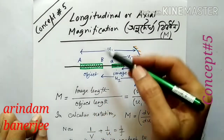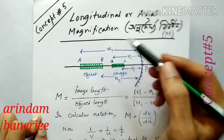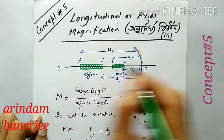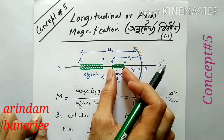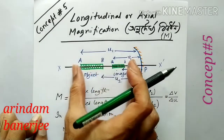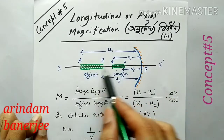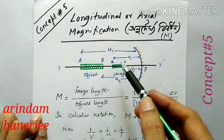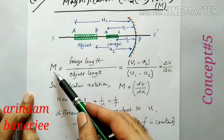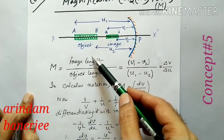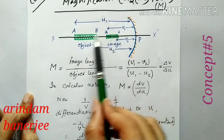We have to look at the object along the principal axis. We have to look at the image — its small length. Length can increase or decrease. The definition of capital M is the length of the image divided by the object length.